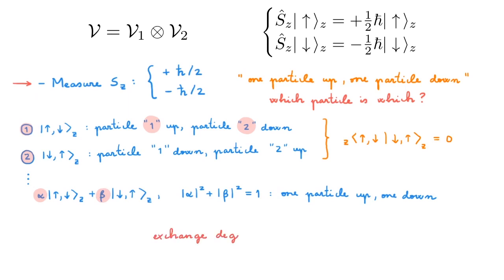This is what we call exchange degeneracy, and it is a feature of any quantum mechanical system of identical particles, as the ideas discussed here for two particles easily generalize to more particles.